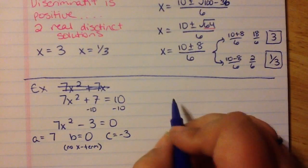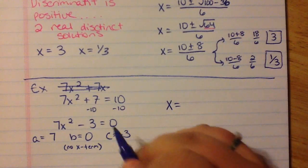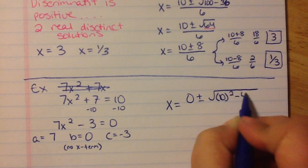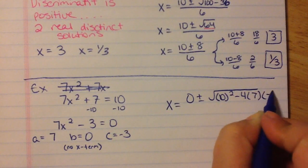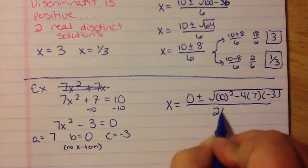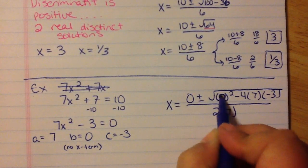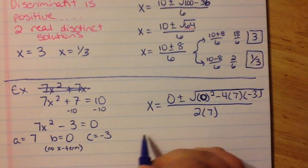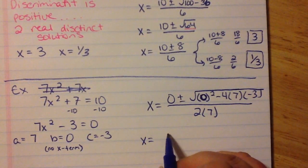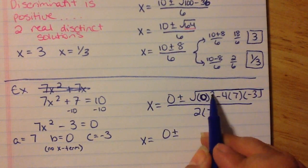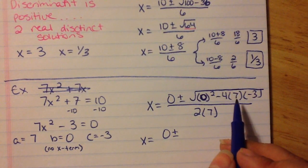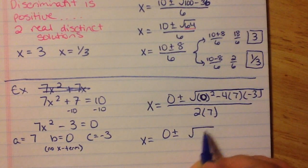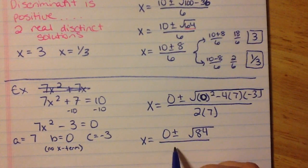So we sing our quadratic formula song again. X equals opposite b — but since b is 0, we just have 0 — plus or minus the square root of b squared minus 4ac divided by 2a. That gives us the square root of 0 squared minus 4 times 7 times negative 3, divided by 2 times 7. So 0 squared is 0, and we have 2 negatives so we'll be adding, and 4 times 7 times 3 is 84. So 0 plus 84 is 84 divided by 14.